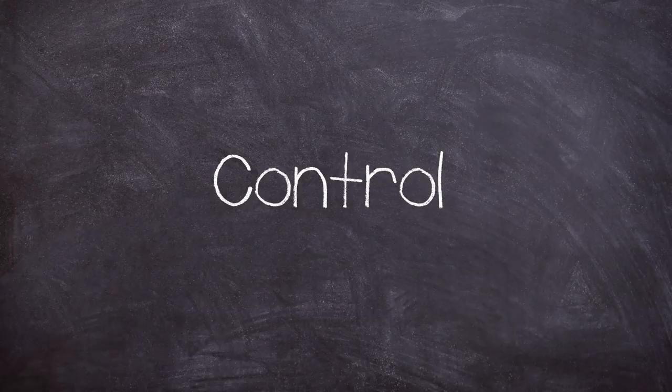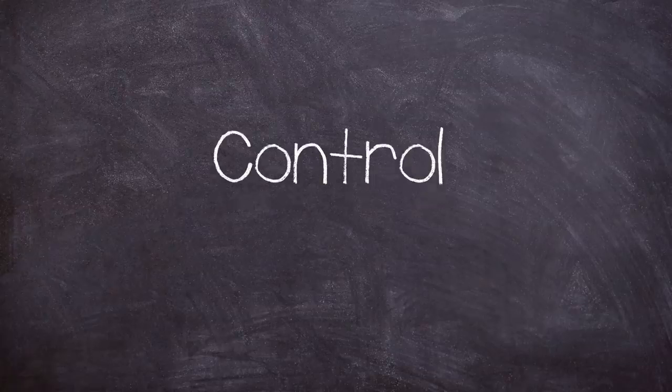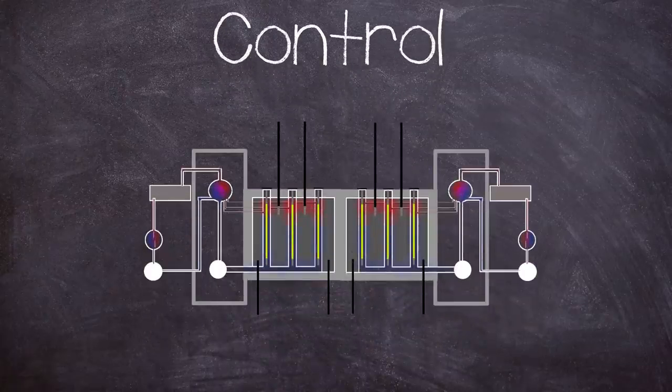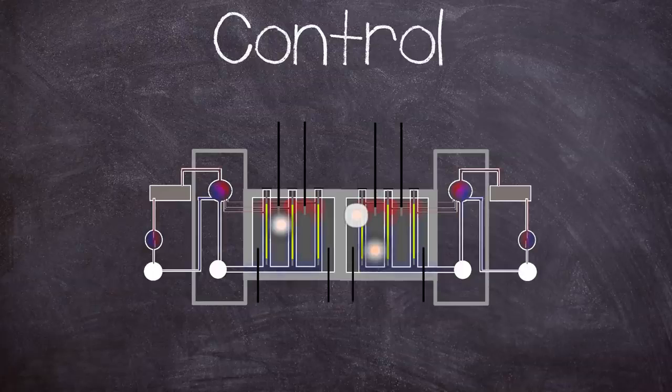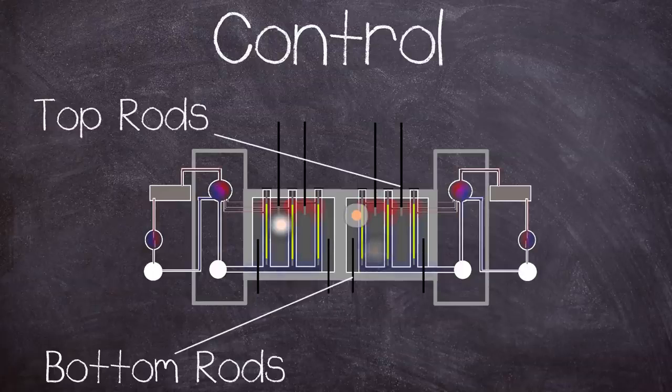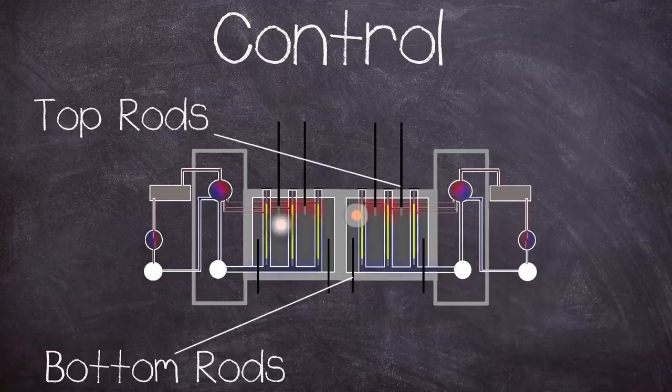Now this leads us quite neatly onto reactor control. As I said before the core region was rather big and this meant that the RBMK was kind of like multiple smaller reactors in that hot spots could occur which needed to be individually managed. And this leads onto the strange design choice for both top loaded and bottom loaded control rods.